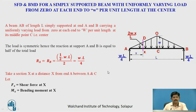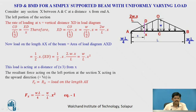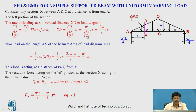Take a section at a distance of x from A. Find the rate of loading at that section using similarity of triangles. The triangle is O, C, A. Using similarity properties: OC upon AC equals L by 2, equals xd upon x. Therefore xd equals OC divided by L by 2, into x. Since OC has intensity W, putting that value: W divided by L by 2 into x equals 2W upon L into x. So this vertical ordinate is 2W/L into x.